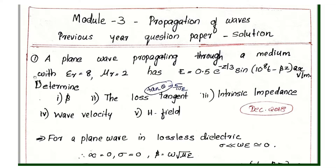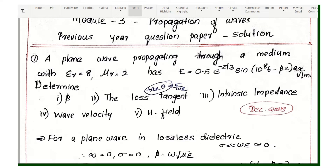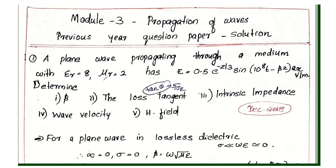Dear students, Module 3 and previous year questions have the same outcome. A plane wave propagating through a medium with epsilon r equal to 8, mu r equal to 2 has electric field E equal to 0.5 e raised to minus z by 3, sin 10 raised to 8 t minus beta z, into ax cap. Determine beta.